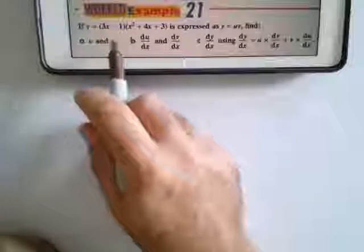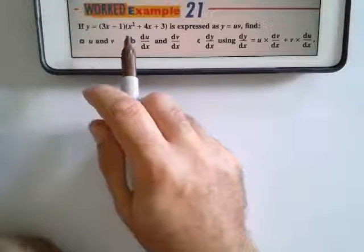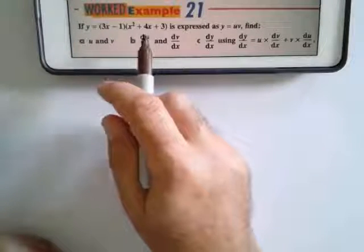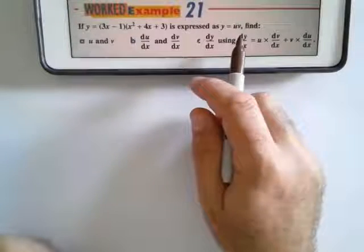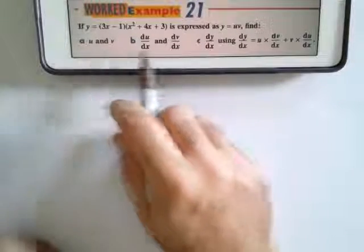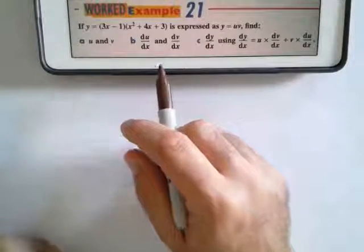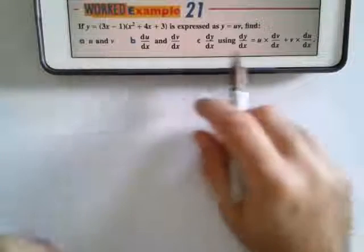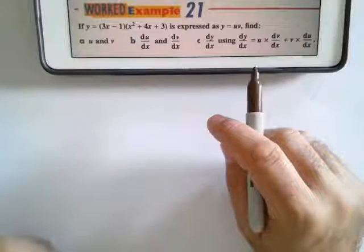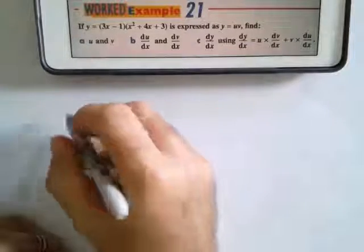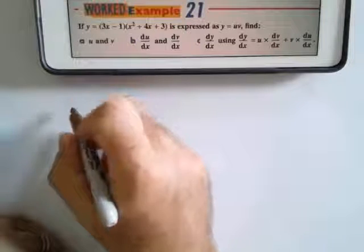If y equals 3x minus 1 times x squared plus 4x plus 3 is expressed as y equals uv, find a, b, and c. Now you will not get this very often where they actually lead you to the question, so I'm going to show you how to do it if you only see this in a normal condition.